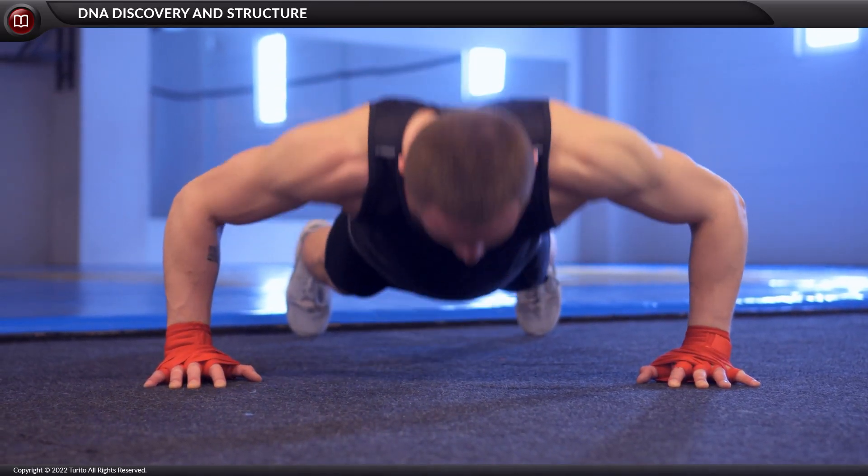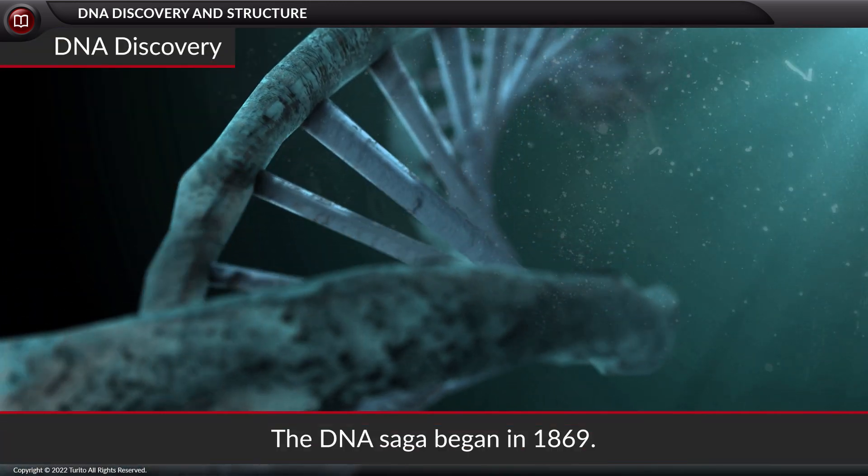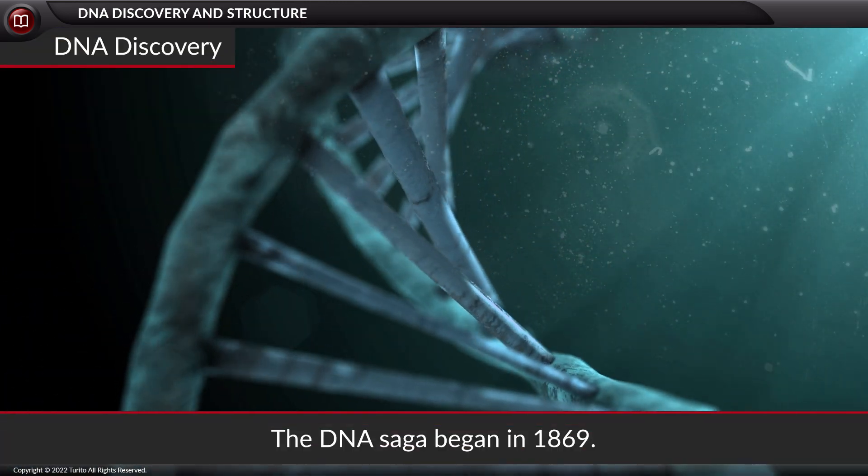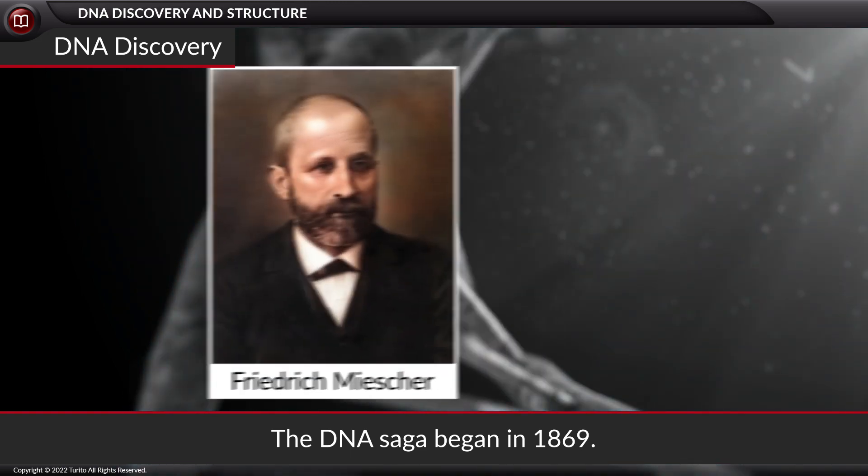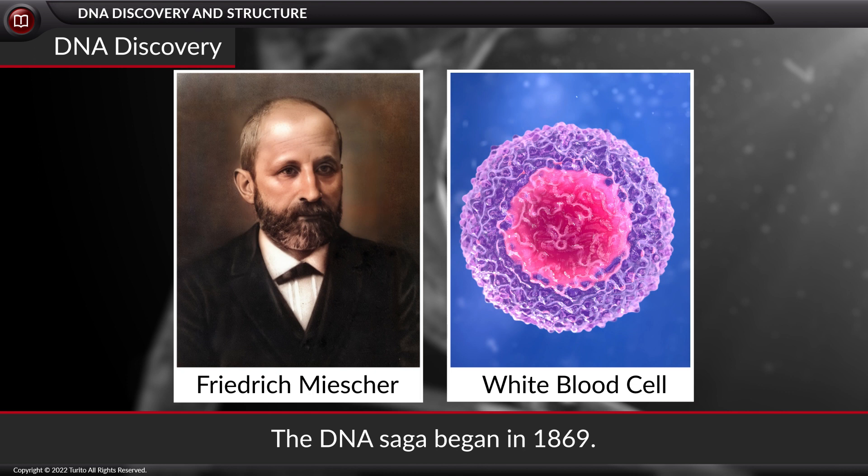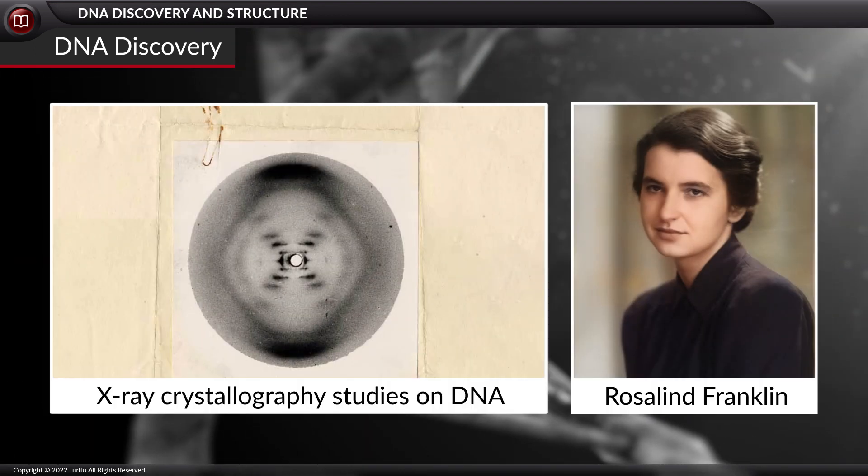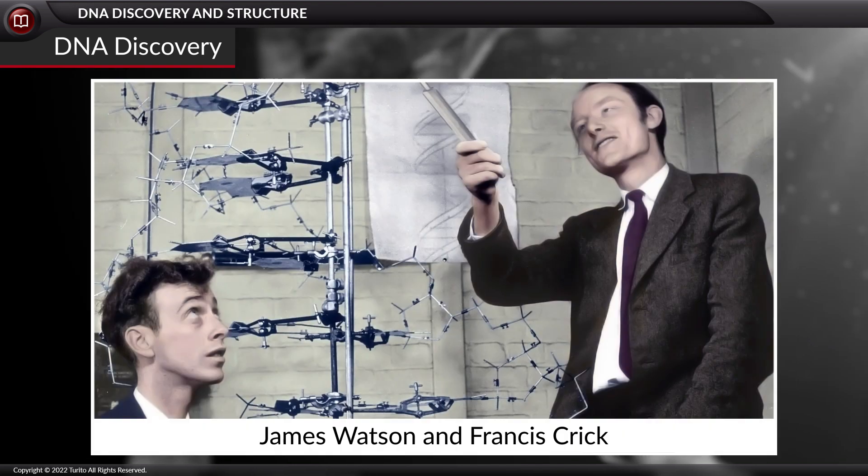The DNA saga began in 1869 when Swiss biochemist Friedrich Miescher discovered a novel material from the nucleus of white blood cells. Later, Rosalind Franklin made X-ray crystallography studies on DNA. Based on the studies of Rosalind Franklin, in 1962 James Watson and Francis Crick discovered the double helical structure of DNA and won the Nobel Prize.